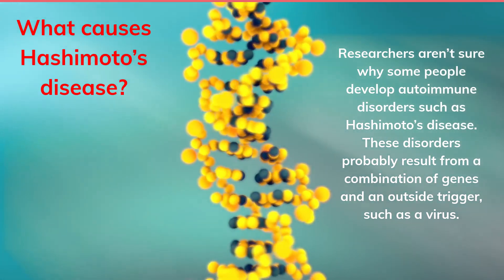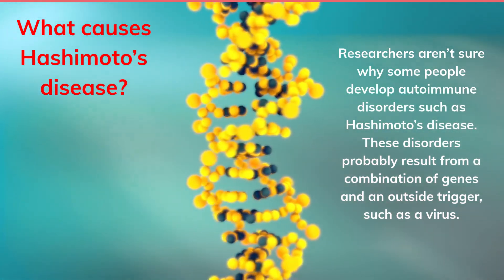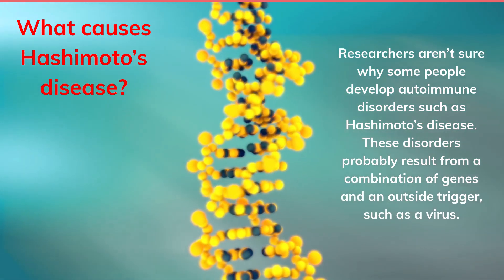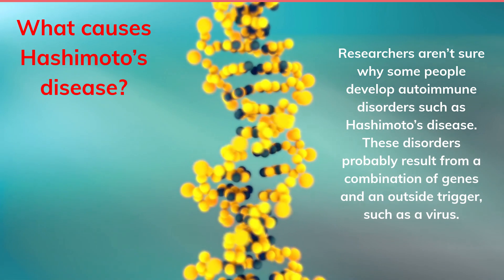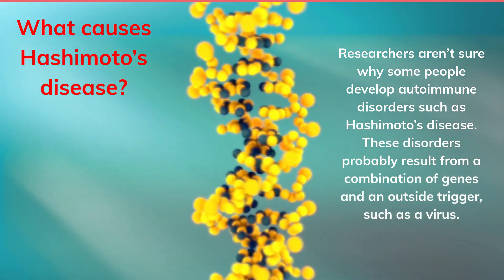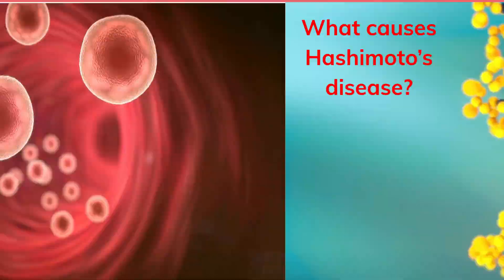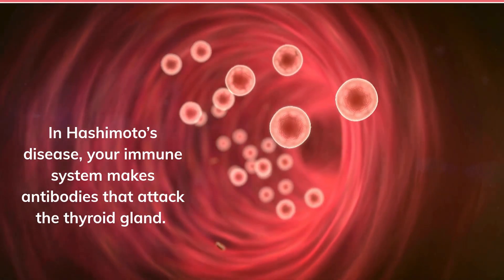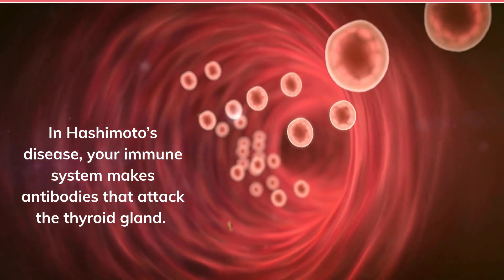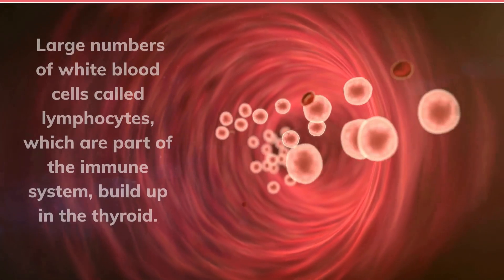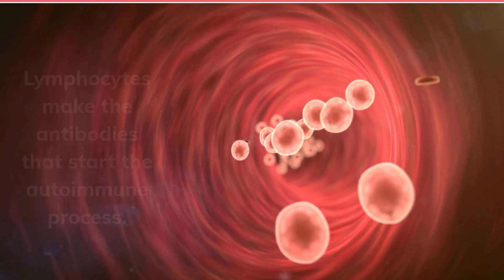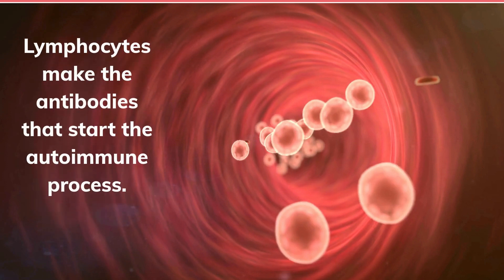What causes Hashimoto's disease? Researchers aren't sure why some people develop autoimmune disorders such as Hashimoto's disease. These disorders probably result from a combination of genes and an outside trigger, such as a virus. In Hashimoto's disease, your immune system makes antibodies that attack the thyroid gland. Large numbers of white blood cells called lymphocytes, which are part of the immune system, build up in the thyroid. Lymphocytes make the antibodies that start the autoimmune process.